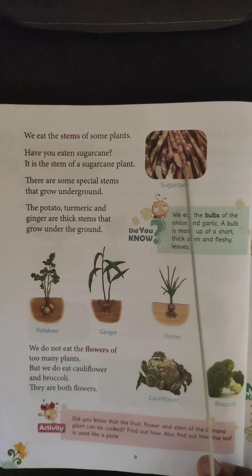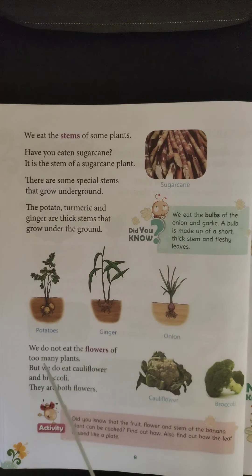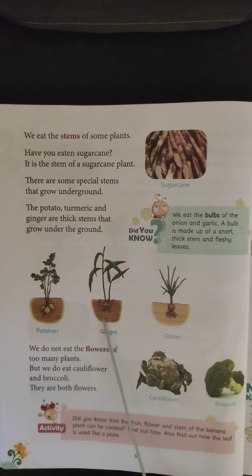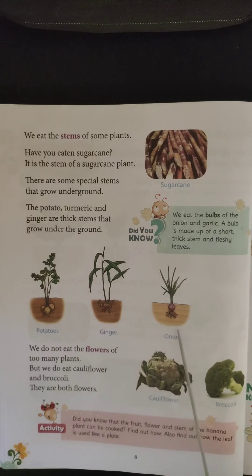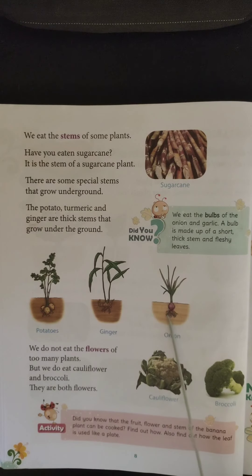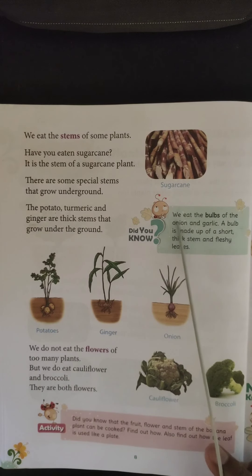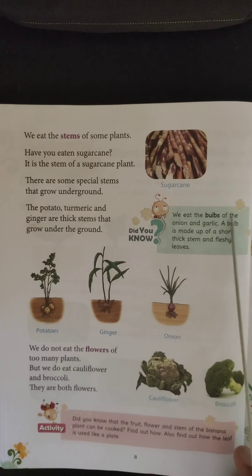Here you can have a look at sugarcane, potato growing below the soil, ginger below the soil underground, and onion, which also grows underground below the soil. We eat the bulbs of onion and garlic.